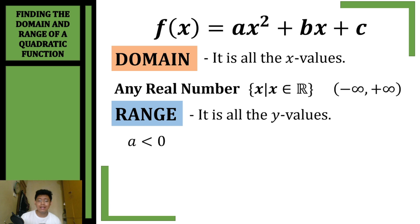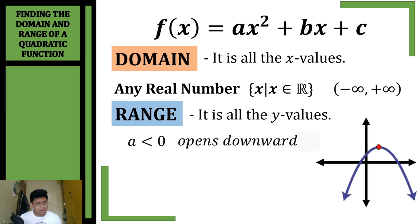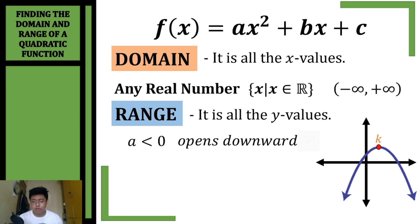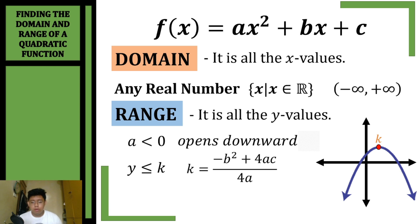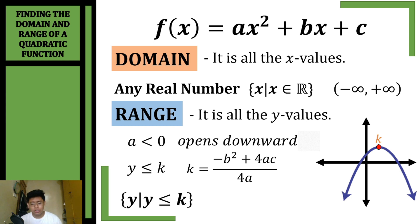If a is less than zero, the parabola opens downward. The vertex is located at the maximum point — the highest part of the parabola. Our k is the maximum value and is the upper limit of y. Since the parabola goes down, y will be less than or equal to k. We use the same formula k = (−b² + 4ac) / (4a), and write the range as y such that y ≤ k, or in interval form from k to negative infinity.